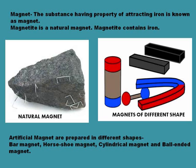Later on, the process of making magnets from pieces of iron was discovered, and these are known as artificial magnets. Nowadays artificial magnets are prepared in different shapes — for example, bar magnet, horseshoe magnet, cylindrical magnet, and ball-ended magnet.